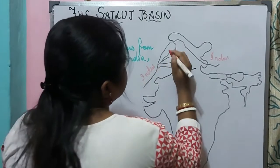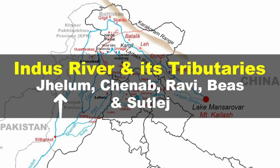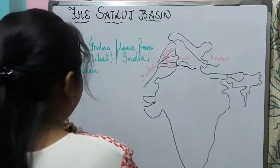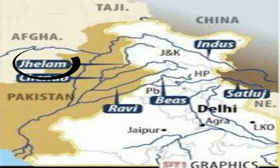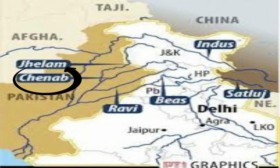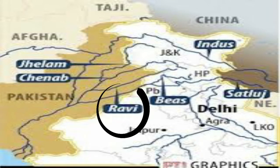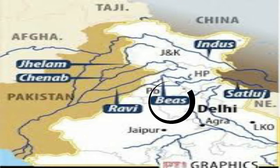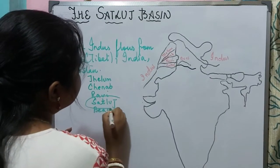The river Indus is divided into five tributaries. The five tributaries of river Indus are: Jhelam, Chenab, Ravi, Satluj, and Beas. In this video we are going to talk about the Satluj river and the basin formed by the Satluj river.